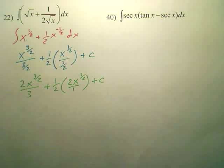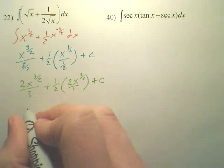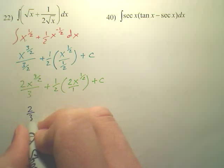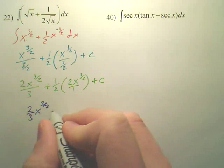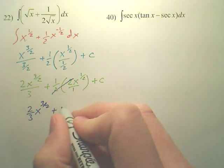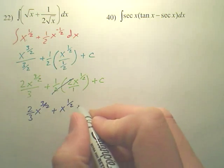My answer, these twos are going to cancel. I have two-thirds x to the three over two, plus these cancel, leaving you x to the one-half, plus c.